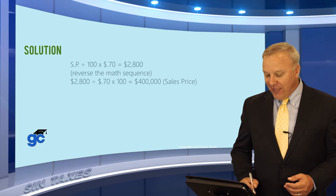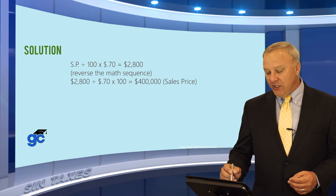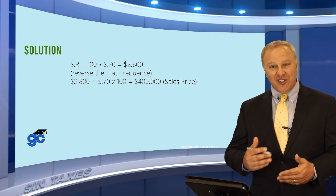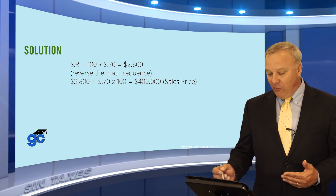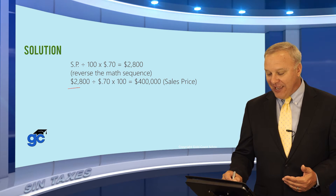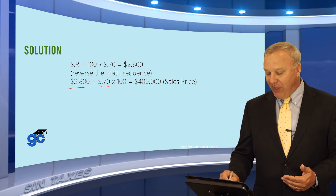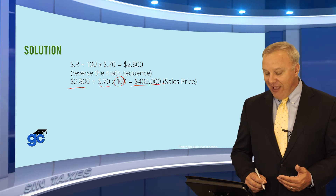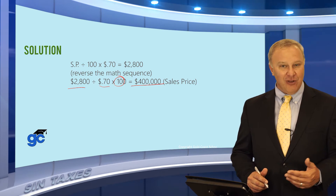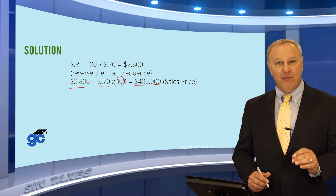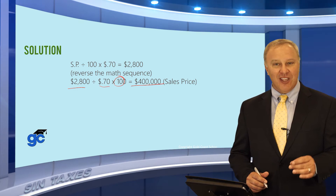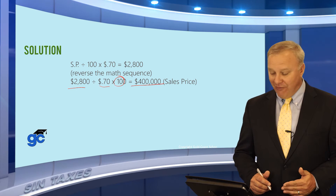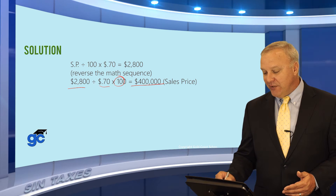Let's take a look at the math. The sales price times $0.70 gives you the doc stamps, so you just reverse it: $2,800 divided by $0.70 then multiplied by $100 gives you the sales price. In your calculator: $2,800 divided by .70, then multiply by 100 or add two zeros — the sales price is $400,000.